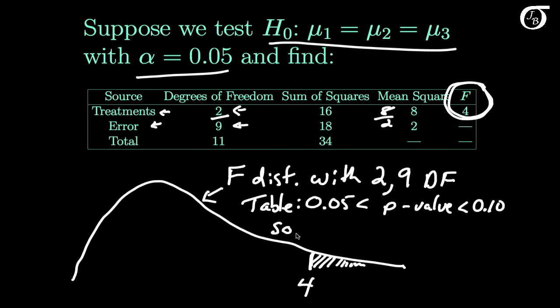So using computer software, we can find that our p-value to 3 decimal places is equal to 0.057. Now of course this falls in the range of values we found from the table, but it gives us a little bit more precision here.